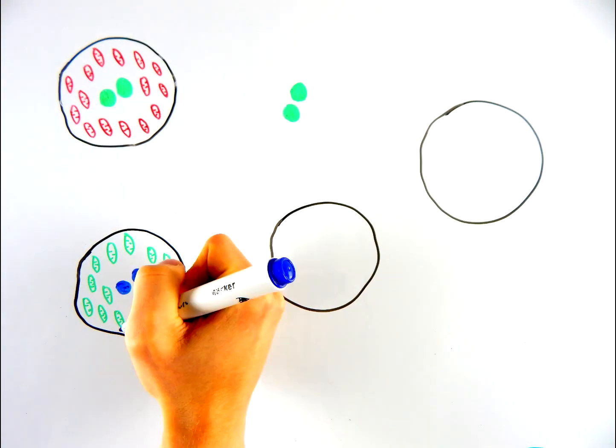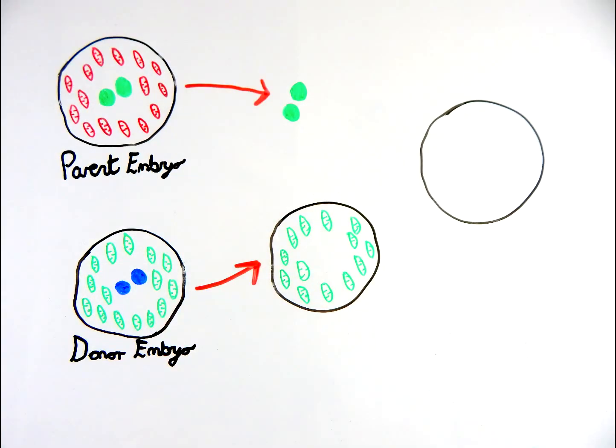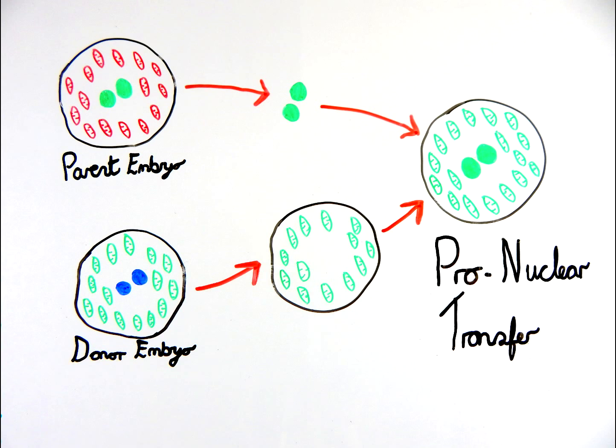One of the techniques of the procedure, known as pronuclear transfer, involves fertilising the mother's egg first and then transferring the nuclear DNA to a fertilised egg from a donor containing healthy mitochondria, where the original nuclear DNA has been removed. The healthy fertilised egg is then implanted into the mother.